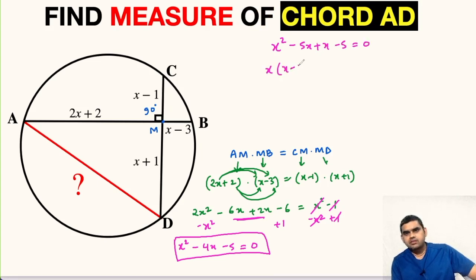We can take X common, X minus 5, plus X minus 5 equals 0. So X plus 1 times X minus 5 equals 0. So this will give us X equals minus 1 and here X equal to 5.